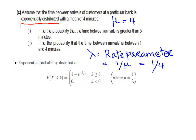Additionally, you might spot it down here at the end of the page. This is actually the same equation in reverse: mu equals 1 over lambda. So the rate parameter lambda and the mean mu are reciprocals of each other.